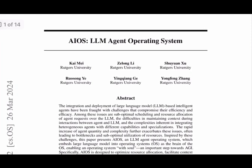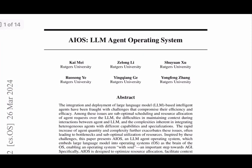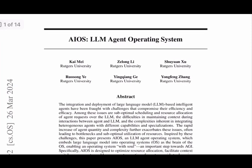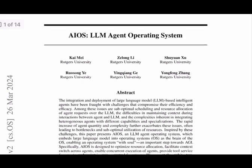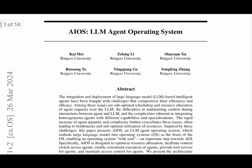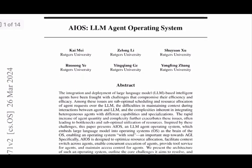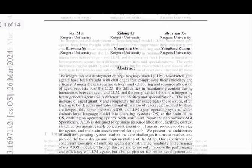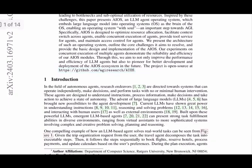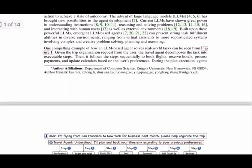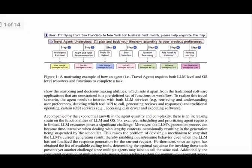AIOS aims to tackle these problems by optimizing resource allocation, enabling seamless context switching between agents, and facilitating access control. To understand how AIOS works, let's take a closer look at its architecture.